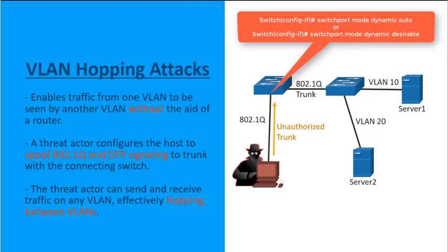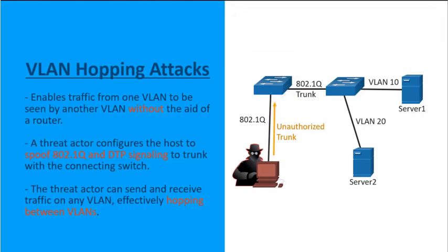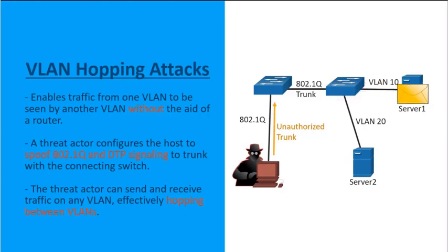The threat actor configures the host to spoof 802.1q signaling and DTP messages so that a trunk will form between the host and the switch. With a successful trunk established, they're able to send and receive traffic on any virtual local area network, effectively hopping between any VLANs they want to connect through.